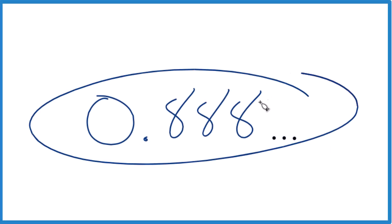So say you have 0.888 and it just keeps repeating - we have a repeating decimal here. How do we get that to be a fraction?